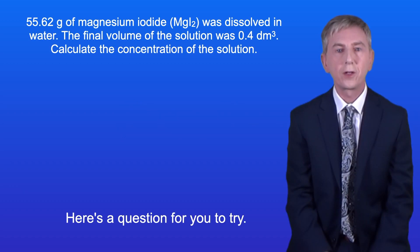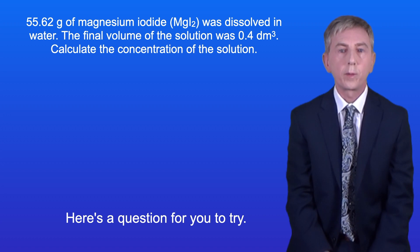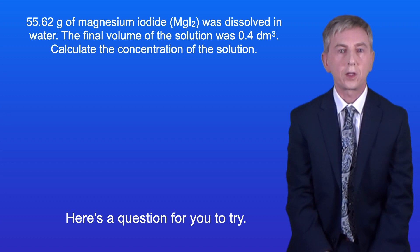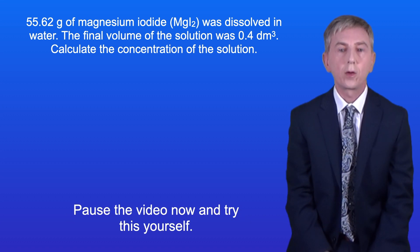Okay, here's a question for you to try. 55.62 grams of magnesium iodide was dissolved in water. The final volume of the solution was 0.4 decimetres cubed. Calculate the concentration of the solution. Pause the video now and try this yourself.